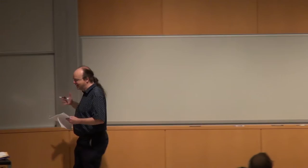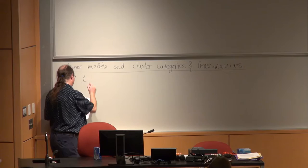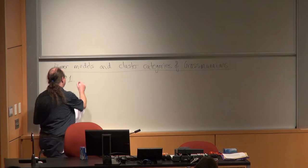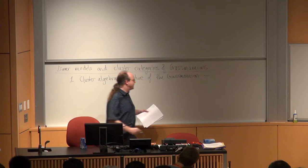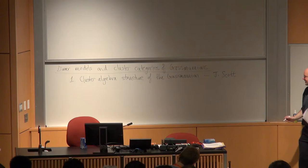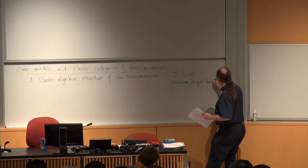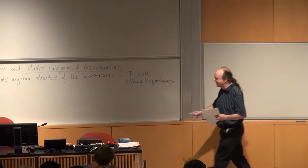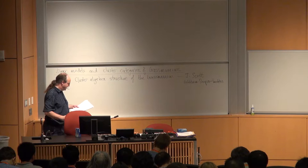I'd like to give an introduction to this topic. The plan is roughly divided into three according to the three talks. I'll start by talking about the cluster algebra structure of the Grassmannian. This is a beautiful result due to Scott. There's also work by Gethman, Shapiro, and Weinstein subsequent to that. I'll be following Scott's work, which is based on Postnikov. I'll tell you right from the beginning what a cluster algebra is. And secondly, I will talk about the Jensen-King-Soo categorification.